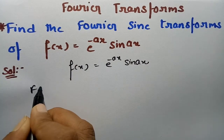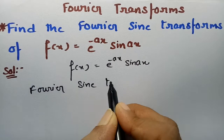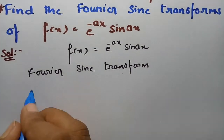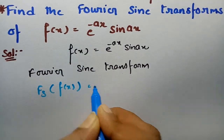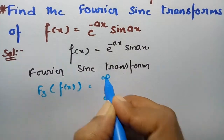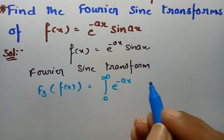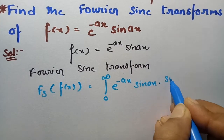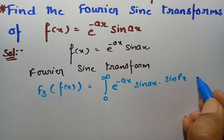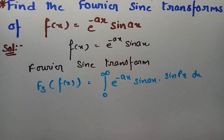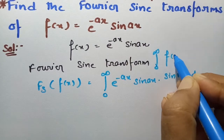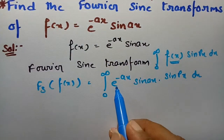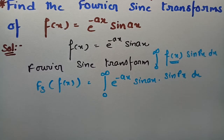We have to find the Fourier sine transform. The formula is: the Fourier sine transform of f(x) is equal to the integral from 0 to infinity of f(x) · sin(px) dx. In place of f(x), I have substituted e^(-ax) · sin(ax) · sin(px) dx.